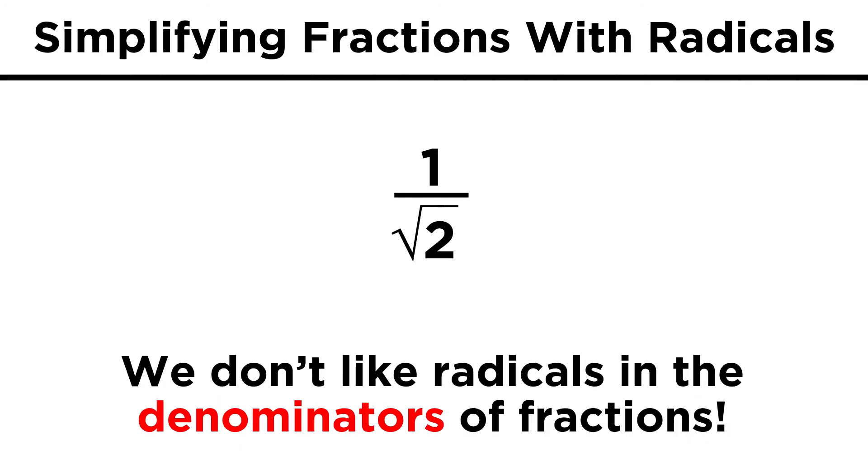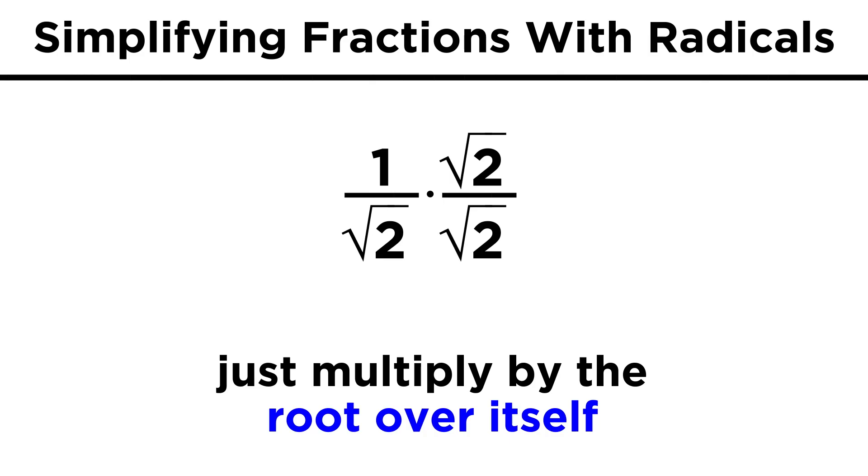The last thing we want to mention is that for whatever reason, we hate having radicals in the denominators of fractions. We always get rid of these when we see them. If we have something like one over root two, we always multiply this fraction by the root in the denominator over itself, so root two over root two.